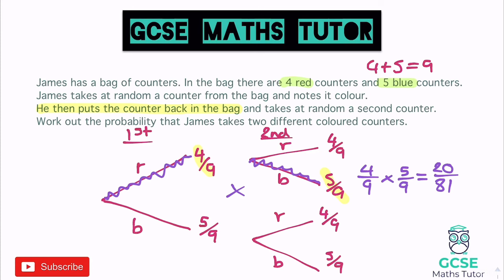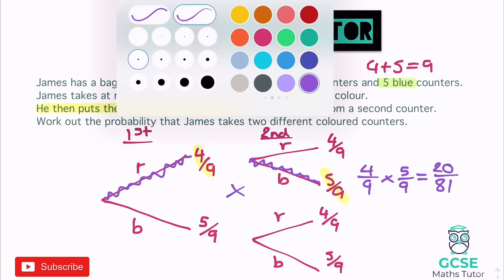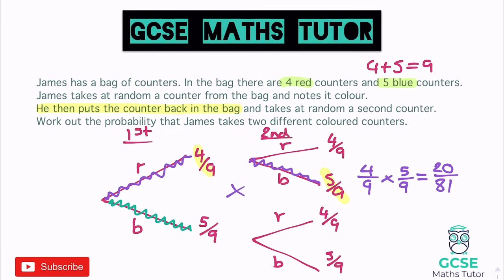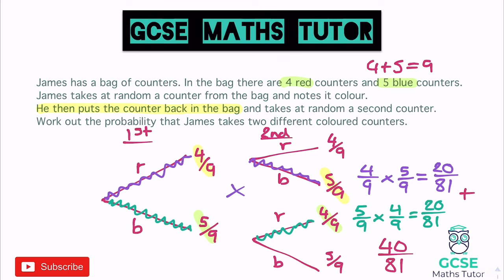The other way of getting two different counters is to take a blue then a red, going through 5/9 and 4/9. Multiplying those together: 4/9 × 5/9 — the same two fractions in reverse — gives us 20/81 again. So there are 20 ways of getting red then blue, and 20 ways of getting blue then red. To get the total probability, we add these together: 20/81 + 20/81 = 40/81. Remember: do not add the denominators together when adding fractions.